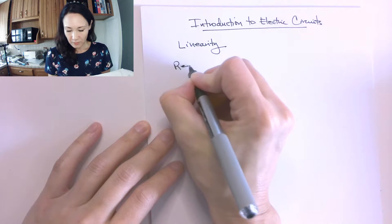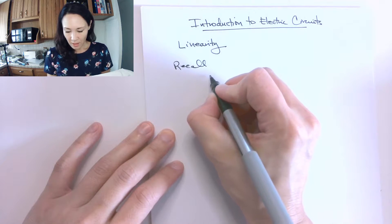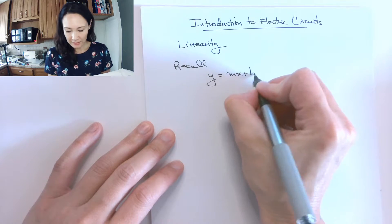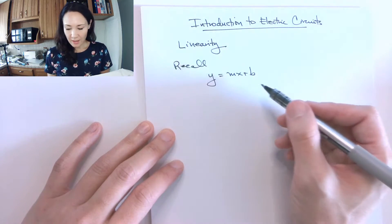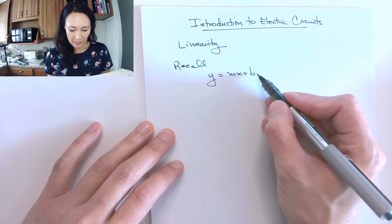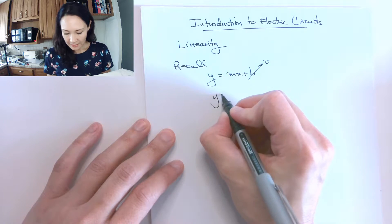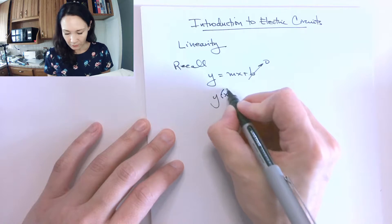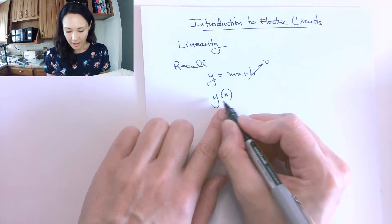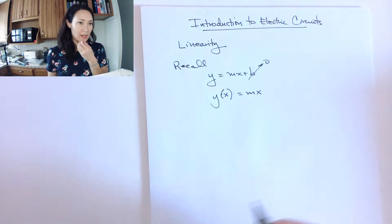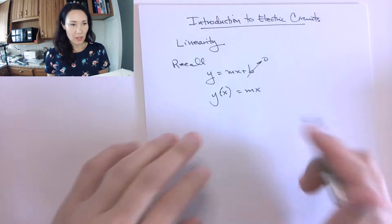Recall that a linear function can be written in the form y equals mx plus b. So if we consider the y-intercept b to be 0, we can write this as y in function notation as a function of x is equal to m times x. That's a basic linear function.